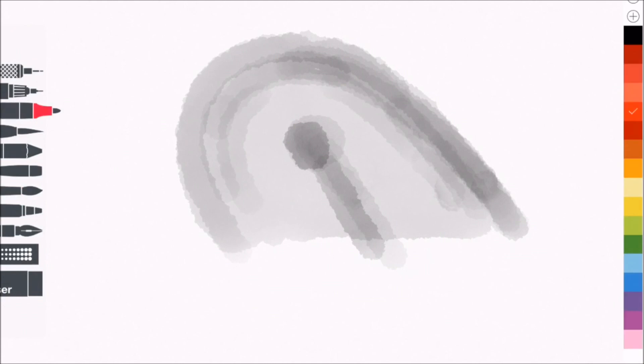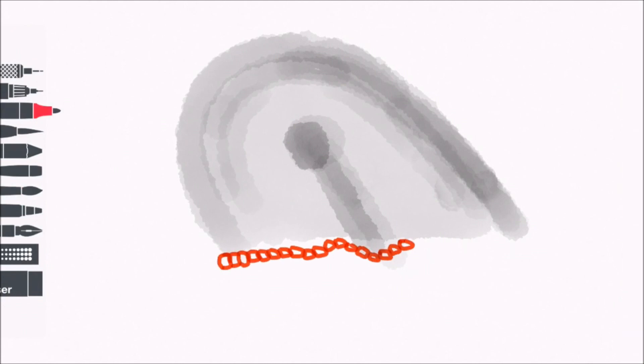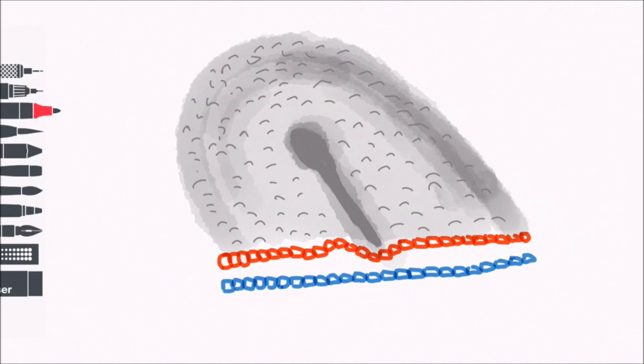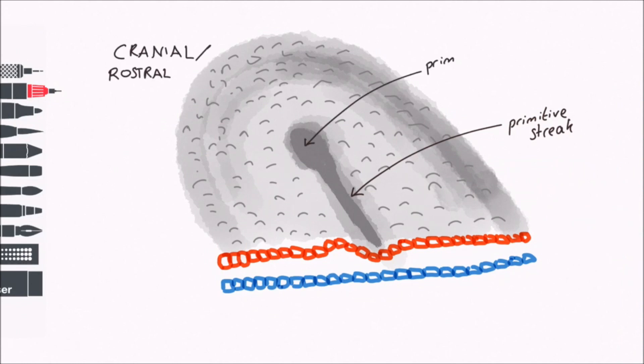At the beginning of week three, a visible line or streak of cells forms on the epiblast layer. So if we look down on the epiblast, like we're looking at it from the amniotic cavity, we can see this disc of epiblast cells. This streak of cells elongates along the rostral-caudal line of the bilaminar disc. Rostral means beak end and caudal means tail end.